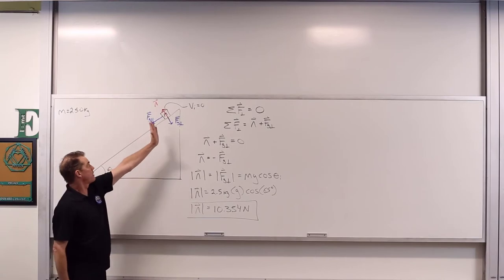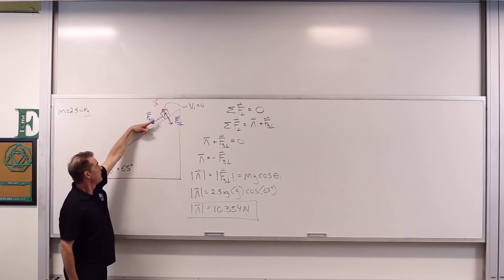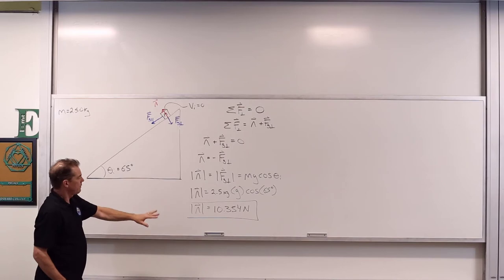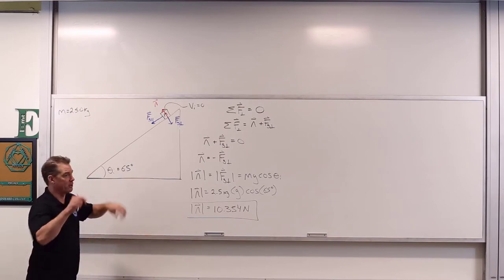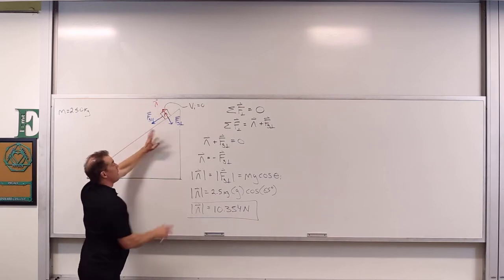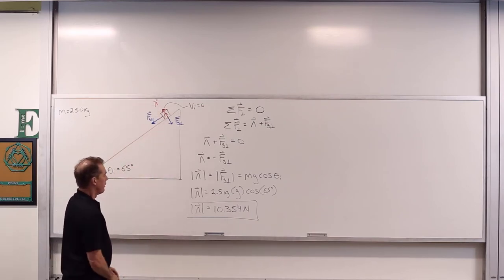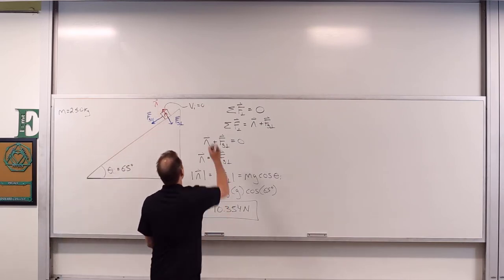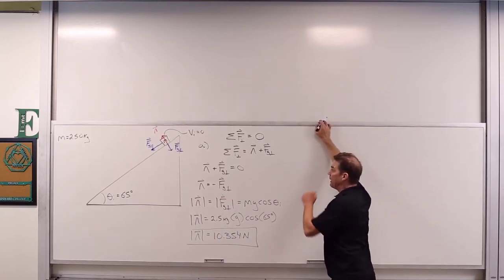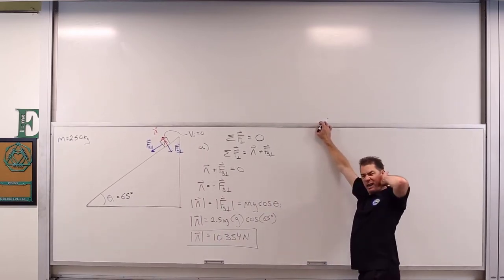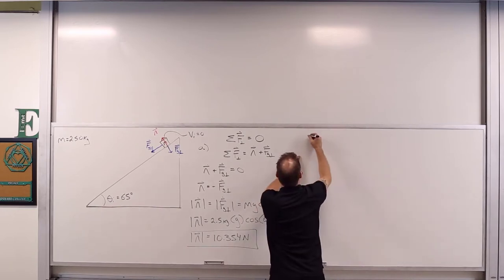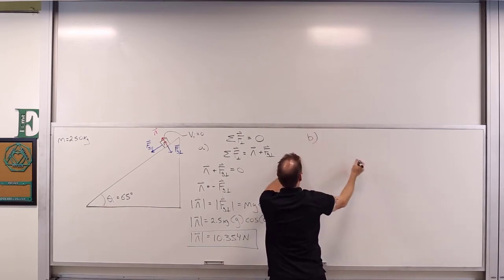So whether the object is held at rest or sliding down freely, that will be the normal force, as long as there are no other forces pushing perpendicular to the surface. That was Part A. We venture onward to Part B: what is the acceleration of this mass as it slides down the incline?